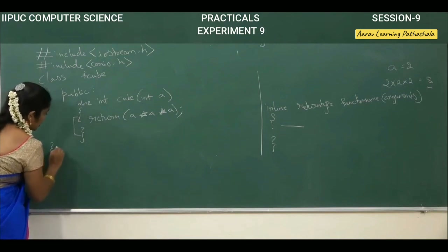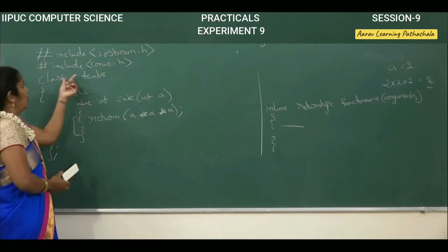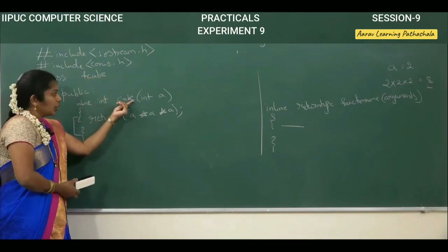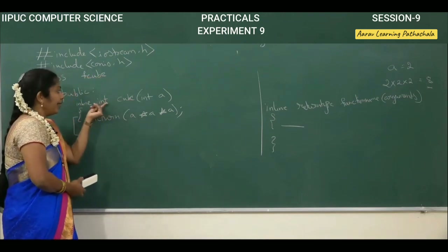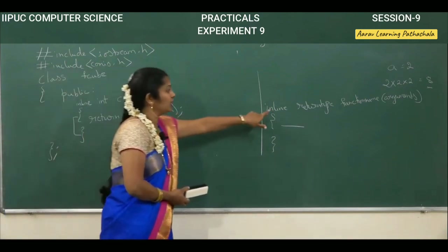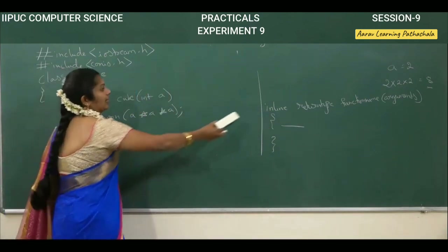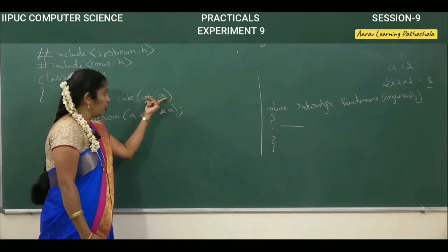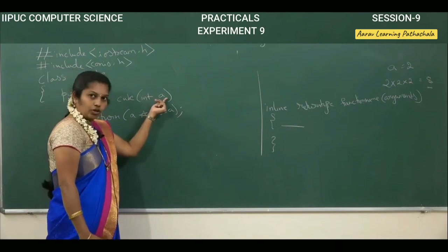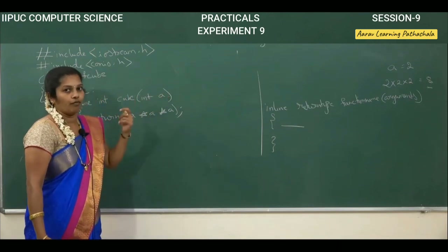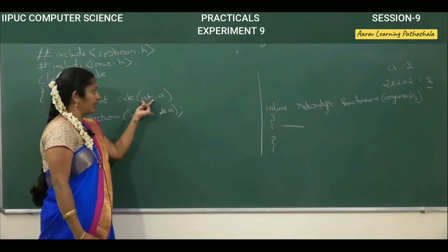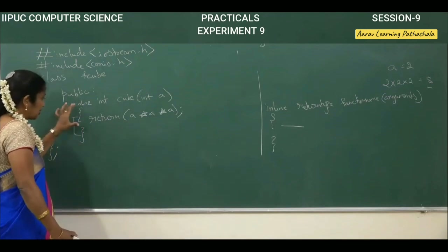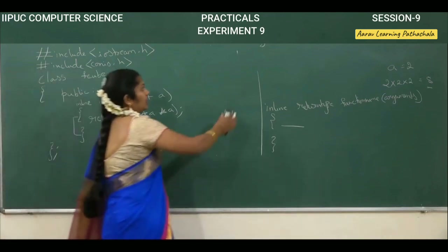Inside the function body, the return statement is: return a into a into a. Then close this function, then close the class. Class fcube is the class name, cube is the function name, integer is the return type. The syntax is: inline, then return type, then function name cube, then argument int a, then return a into a into a, then close the function and close the class.